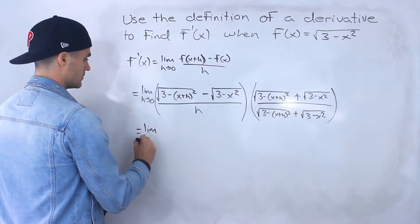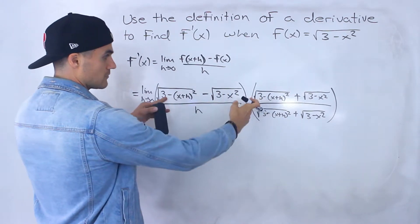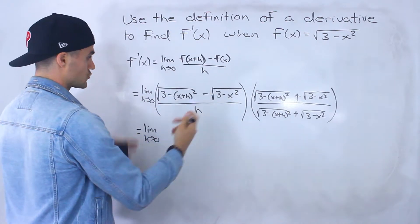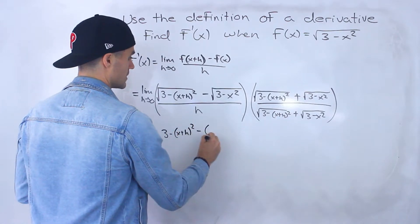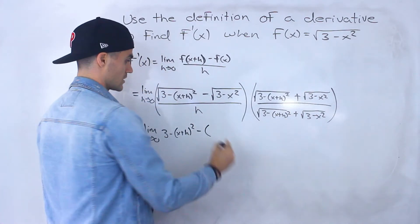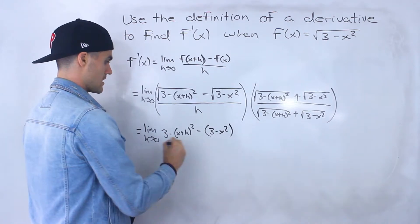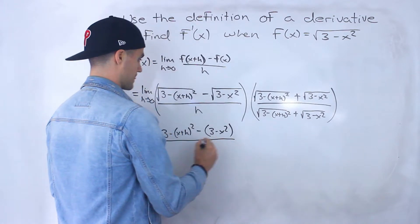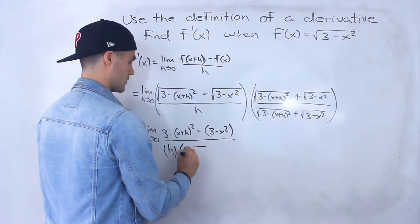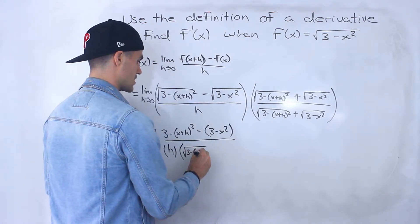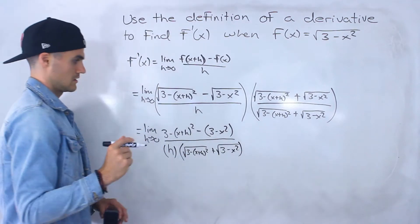So it's like we're multiplying by 1. What we would end up with is the limit as h goes to 0. Notice the ends — because they are the same, the square roots cancel — so we'd get 3 minus (x plus h) squared minus 3 minus x squared, all over h times the square root of 3 minus (x plus h) squared plus the square root of 3 minus x squared.